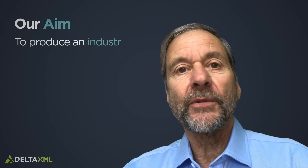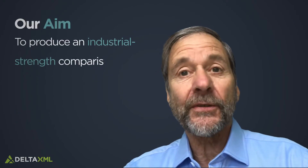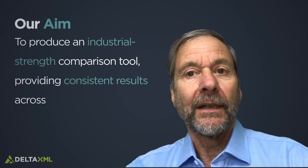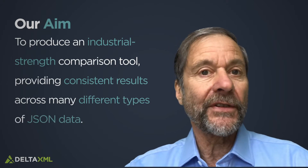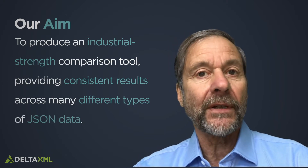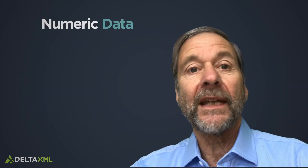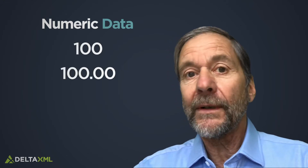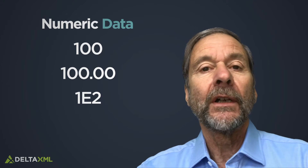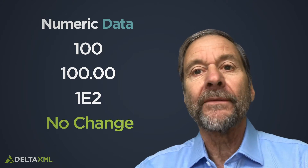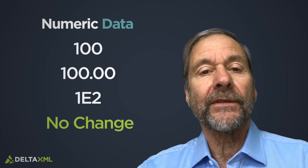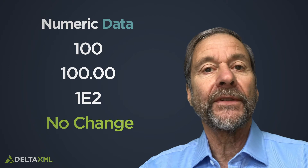Our aim has been to produce an industrial strength comparison tool capable of providing consistent results across many different types of JSON data. For example, we needed to ensure that when numeric data is compared, then the comparison of 100, 100.00, and 1e2 would always result in no change, although the textual representation of these numbers is different.